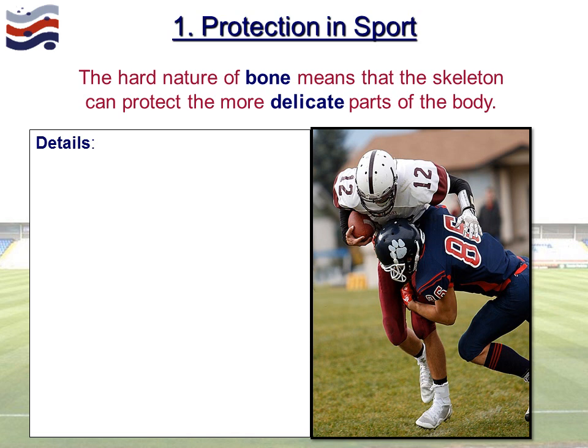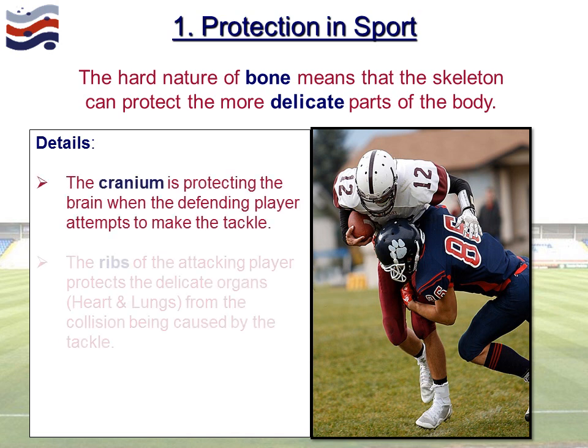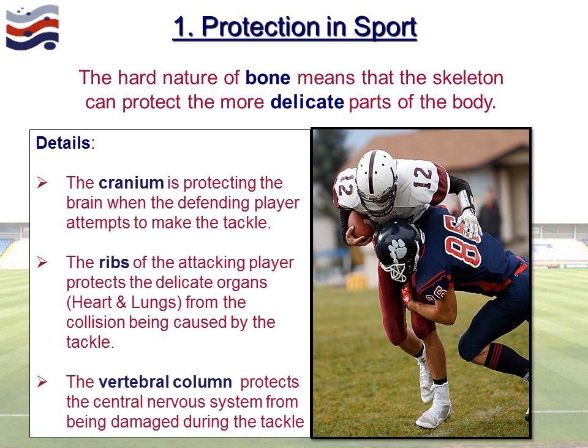Applying this to sport using American football — the hard nature of bone protects more delicate parts of the body. The cranium is protecting the brain when the tackler in the blue strip attempts to make the tackle. The ribs of the attacking player carrying the ball are obviously protecting the heart and lungs from any kind of collision. And in both players, the vertebral column is protecting the central nervous system, which runs from the back of the brain all the way down the spine.